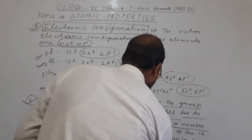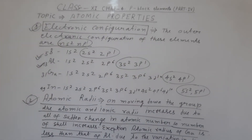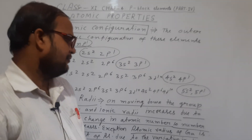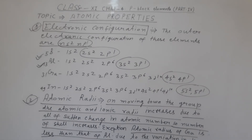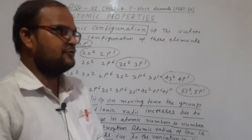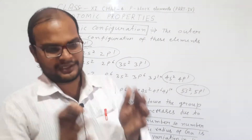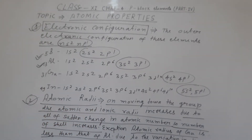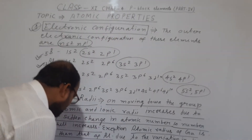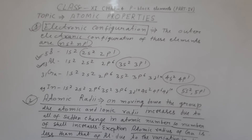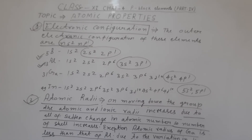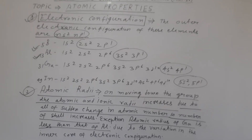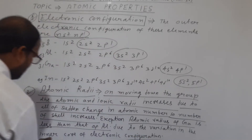However, there is an exception in the Boron family: the atomic radius of Gallium is less than that of Aluminium. This is due to variation in the inner core electronic configuration — Gallium has completely filled 3d¹⁰ electrons in its inner core, which causes this anomaly.